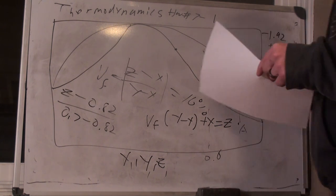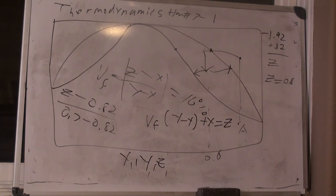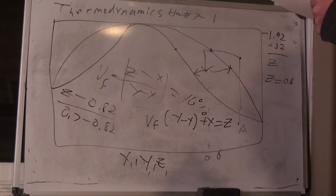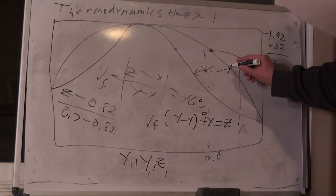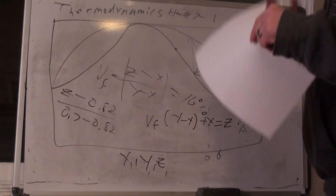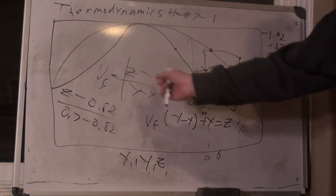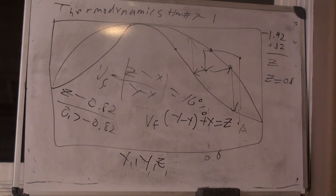The mixture is sent into a flash tank to separate into liquid and vapor. The liquid is sent to a throttling valve to lower the pressure until one drop remains — meaning I go to the dew line. The vapor is compressed until one bubble remains — meaning I keep going up until I hit the bubble line.